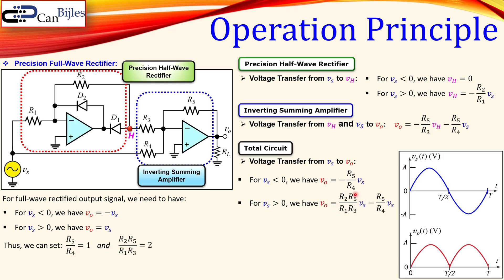For example, if R5 over R3 times R2 over R1 is set to a value, combined with R5 over R4, the result must add up to give Vs. We can make the design easy by setting R1, R2, R4, and R5 all equal to the same value R. Then resistor R3 must be half of R — that is, R over 2.